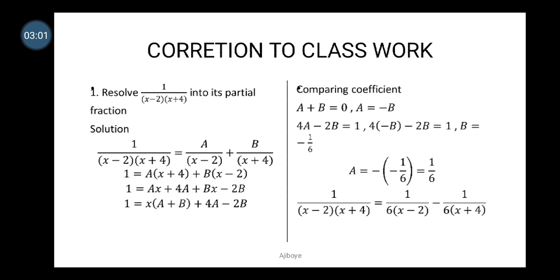At this junction we compare coefficients. There is no x term on the left-hand side, which simply means the coefficient of x on the left-hand side is zero — that is why it does not appear. So a plus b, which is the coefficient of x on the right-hand side, equals zero.